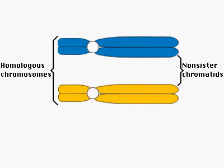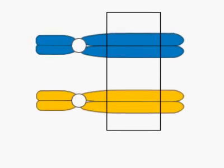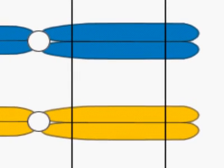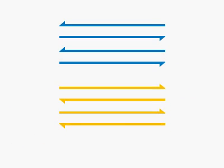Crossing over occurs between non-sister chromatids of homologous chromosomes. Here we focus on non-sister chromatids at the DNA level to describe the Meselson-Radding model of crossing over.